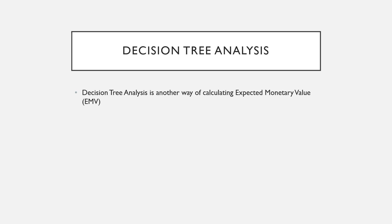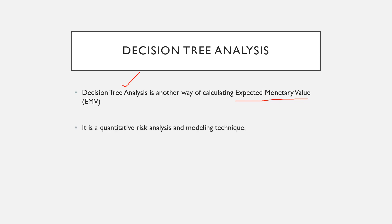Decision tree analysis is basically another way of calculating EMV, or Expected Monetary Value. EMV is an analysis that helps you choose which path your project should take based on monetary value. Decision tree analysis also helps you come up with those monetary values. This entire analysis is a quantitative risk analysis and modeling technique, and it will be much clearer once we look at an example.